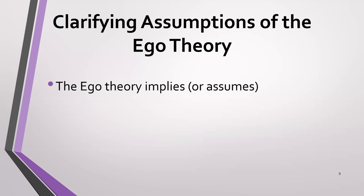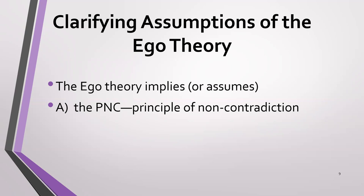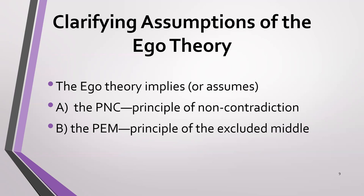We need to clarify the assumptions of the ego theory, and there are two main ones. The ego theory assumes the truth of two broadly accepted logical principles as applied to persons. One is the principle of non-contradiction: you cannot both survive and not survive — you either survive or you do not, you can't have both. The other is the principle of excluded middle: the idea that there's no partial survival, no middle ground. There's no vague 'sort of surviving' — people aren't the kind of things that can sort of survive but not completely survive.